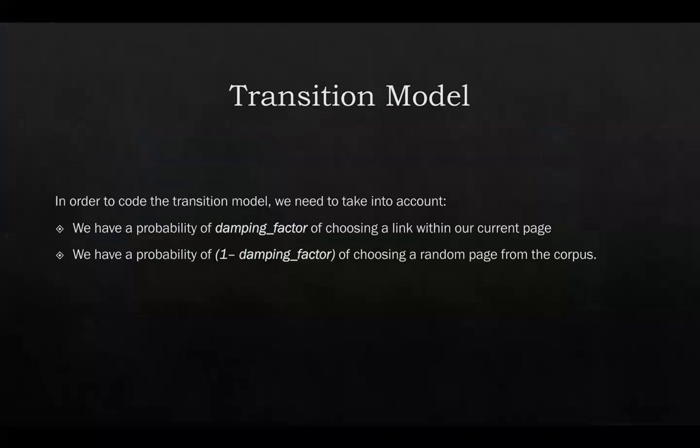Starting with the transition model, it is important that we take into account the following. We can have two different options of going to a different page. The first one being choosing a link within our current page, and this will have a probability of damping_factor, and the other option with a probability of one minus damping_factor is choosing a page at random.